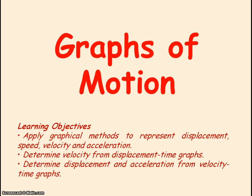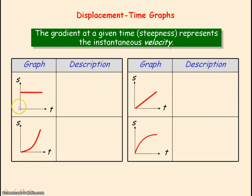We're going to be looking at graphs of motion. For a displacement-time graph, the displacement is along the y-axis and time is along the x-axis. The gradient of a displacement-time graph represents the velocity.